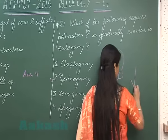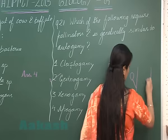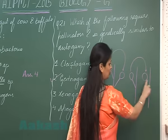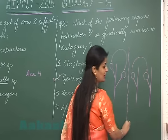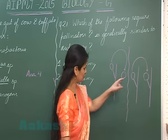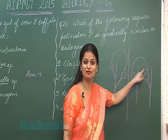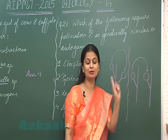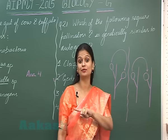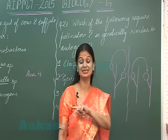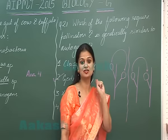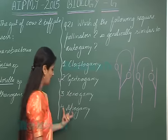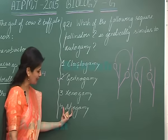Now coming to xenogamy. In xenogamy, again the pollination is between two different flowers, but now they belong to two different plants. So surely there is a requirement of pollinators, and since the two flowers belong to different plants, they are not genetically the same — so it is genetically cross-pollination.